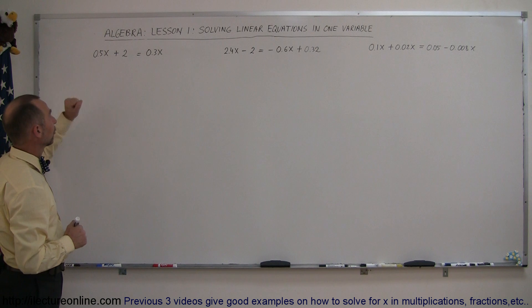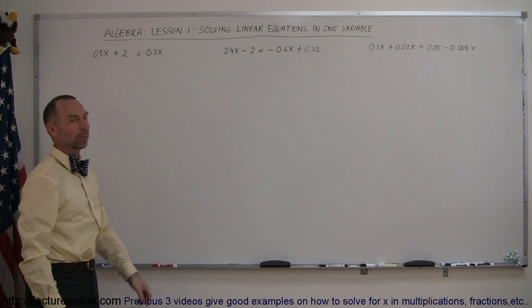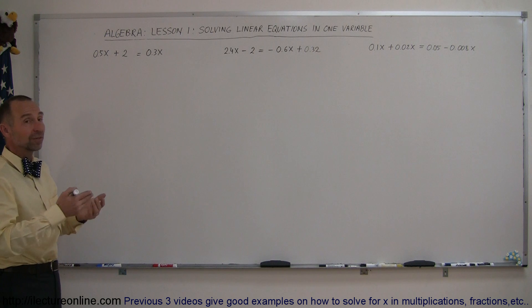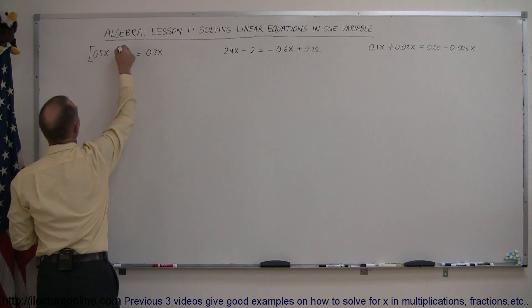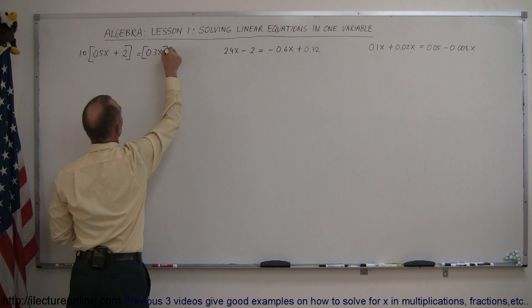If you look at our first example, notice that we have one decimal place here, no decimal places there, and one decimal place there. To get rid of decimals, the best thing to do is to multiply times 10 or 100 or 1,000 to get rid of the number of decimal places we're dealing with. In this case, since there's only one decimal place, we want to multiply both the left and the right side equation by 10, because that will get rid of all the decimal places here.